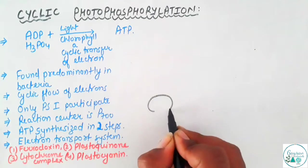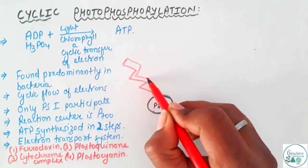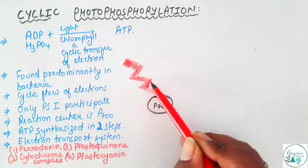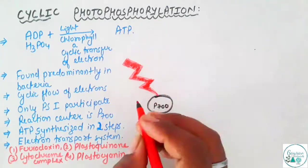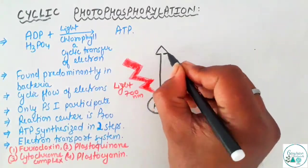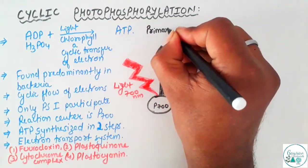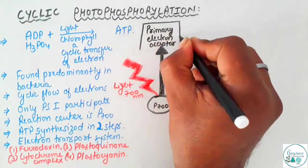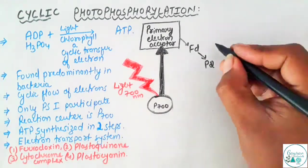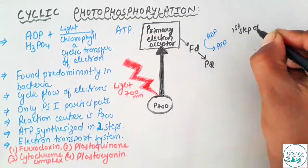If one were to observe the cyclic photophosphorylation diagrammatically, there is a Photosystem 1 with an antenna complex and a reaction center which is P700. PS1 would have its reaction center as P700, and P700 would absorb light of 700 nanometers. Whenever light of 700 nanometers falls on this reaction center, it causes the electron in the chlorophyll of P700 to get excited and released. This released electron from P700 would be accepted by a primary electron acceptor and would pass its energy to ferredoxin, plastocyanin, plastoquinone, cytochrome, and plastocyanin. During this, ADP is converted into ATP — the first step of ATP release.